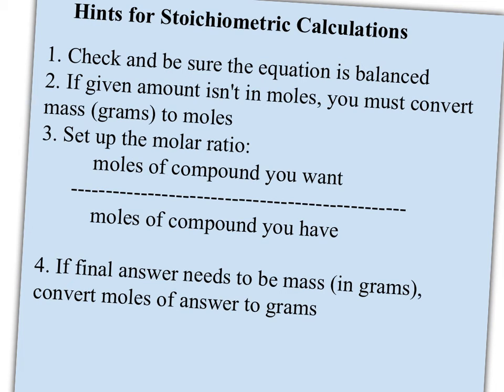So here's my hints for stoichiometric calculations. First, you want to check and be sure you have a balanced equation. If the given amount isn't in moles, then you have to convert to grams, or have to convert the grams to moles. Then you set up the molar ratio, always want over have. And then when you have your molar amount, if that's all they want, great, you're good. Otherwise, you need to convert that final answer back to grams. So step one and three are always going to be involved. You're always going to need the balanced equation. You're going to need a molar ratio. Whether or not you have to convert between moles and grams will depend on the individual questions.